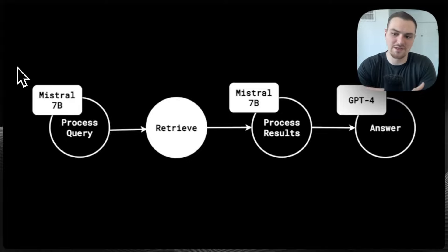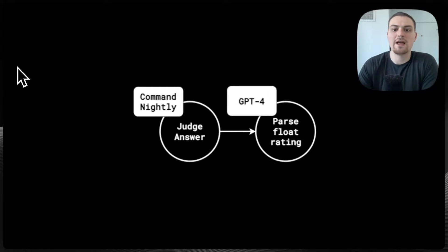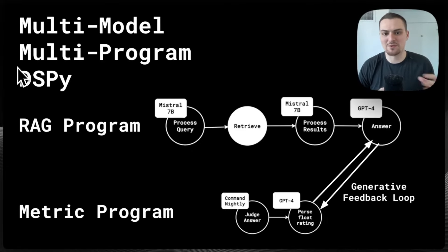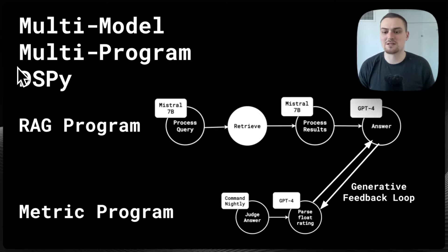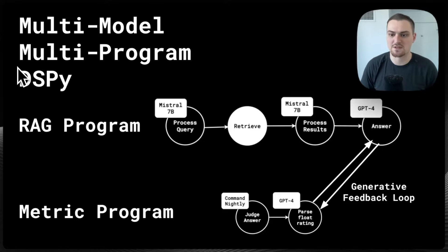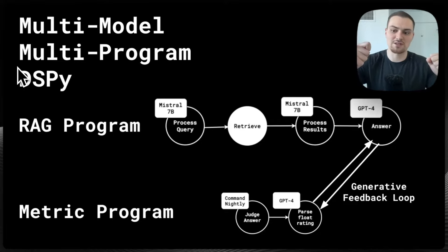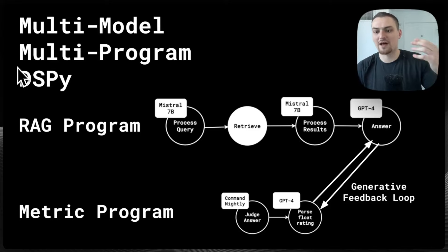Here's a visual example: you could have Mistral 7B as the language model behind processing the query and processing the results, then GPT-4 as the answerer. When you're judging the question, say Cohere's Command Nightly judges the answer, and then GPT-4 just parses the float rating to ensure structured output is followed. You can compose these multi-model, multi-program DSPy systems. I'd call this a generative feedback loop — a term we're pushing at Weaviate — where AI models work with each other to generate things and keep building on it.